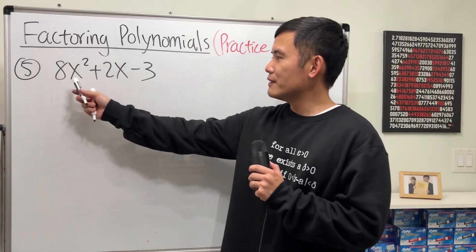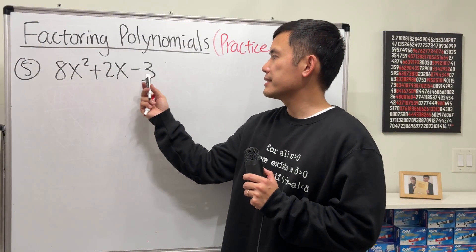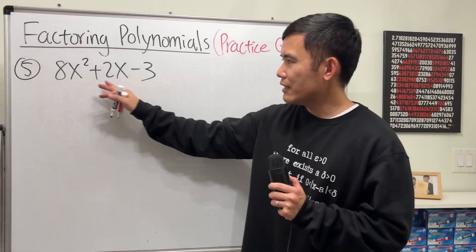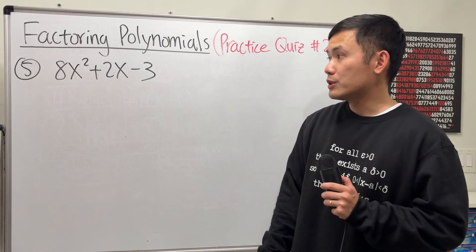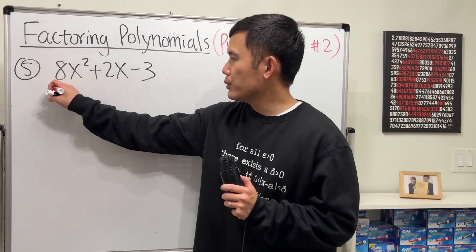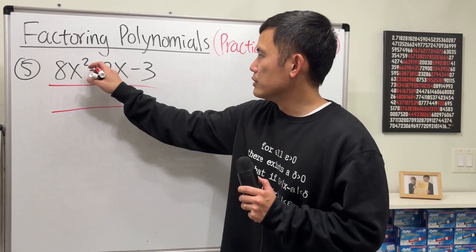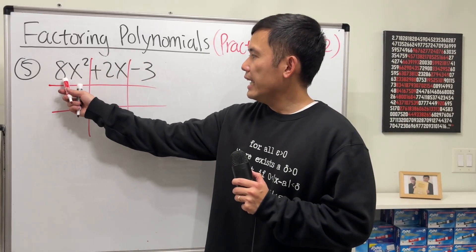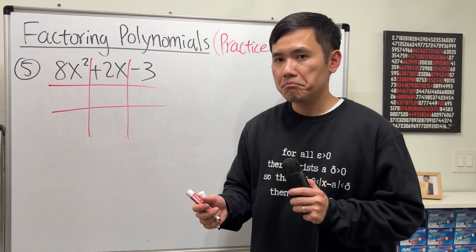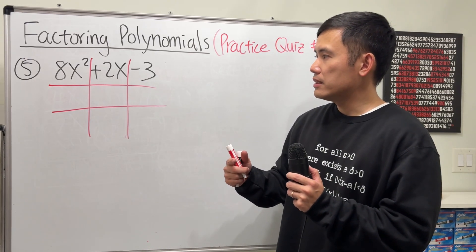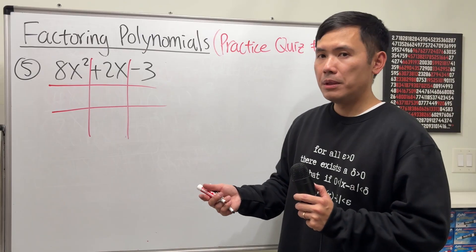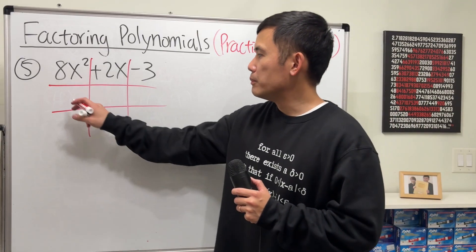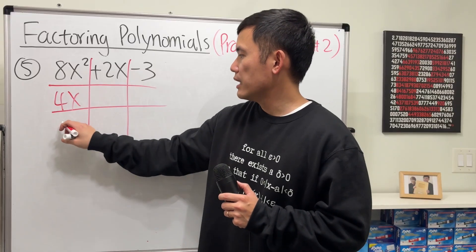Now for the last one, we have 8x² + 2x - 3. So this is a quadratic trinomial, and we don't have any common factor, so we'll just proceed. And we are going to use the tic-tac-toe so that we can make sure we get the correct combination. 8x² - what times what would give us that? 4x times 2x, yes. Or maybe 8x and x. Which one? I don't know yet. I'm just going to try 4x and 2x.